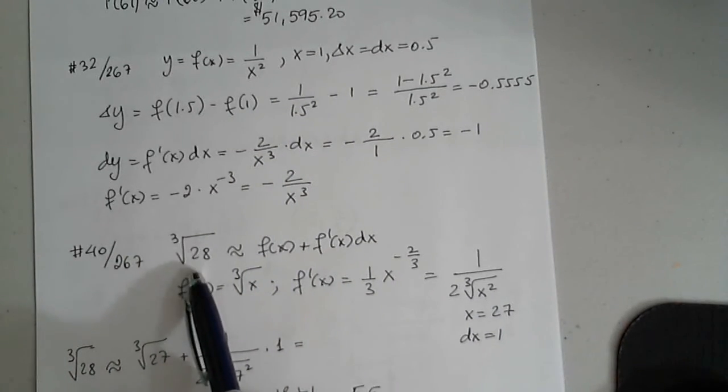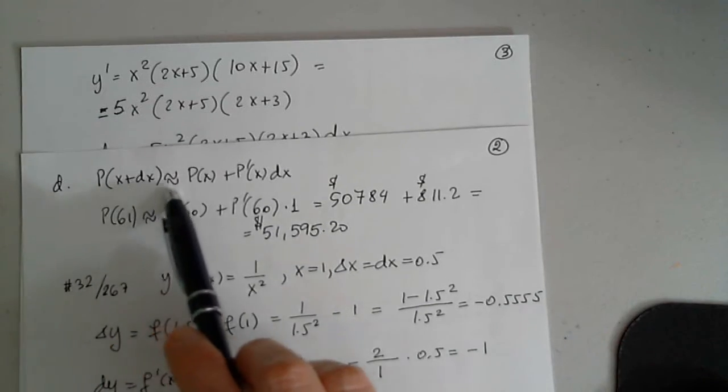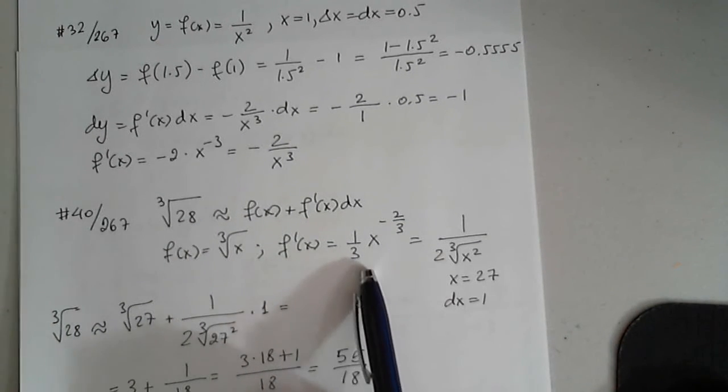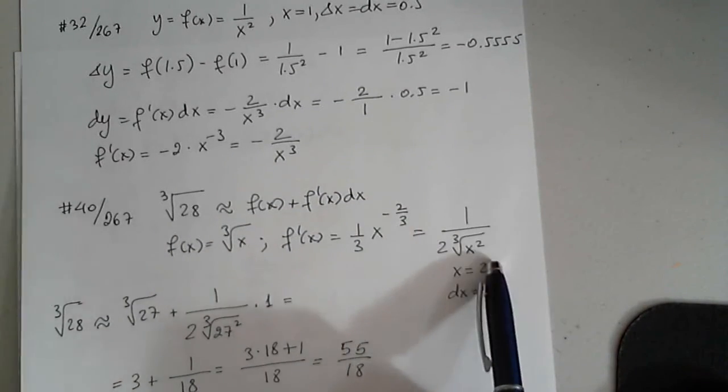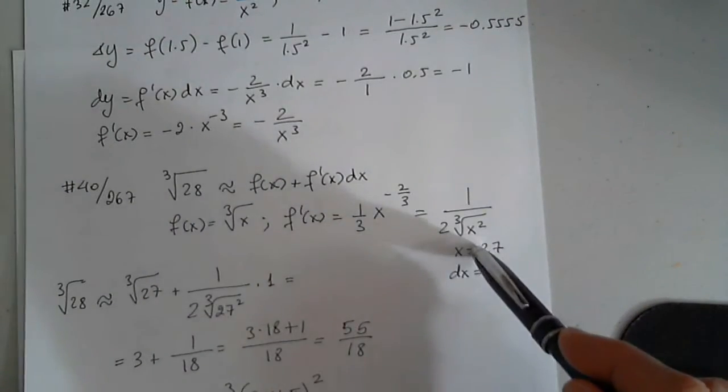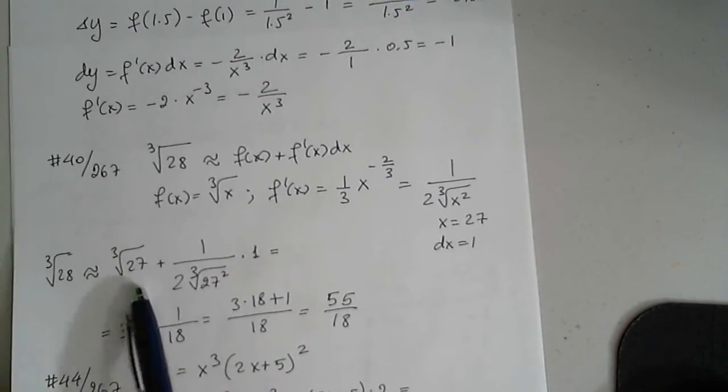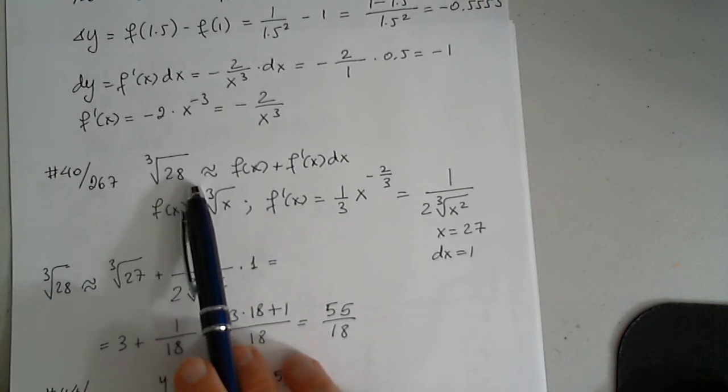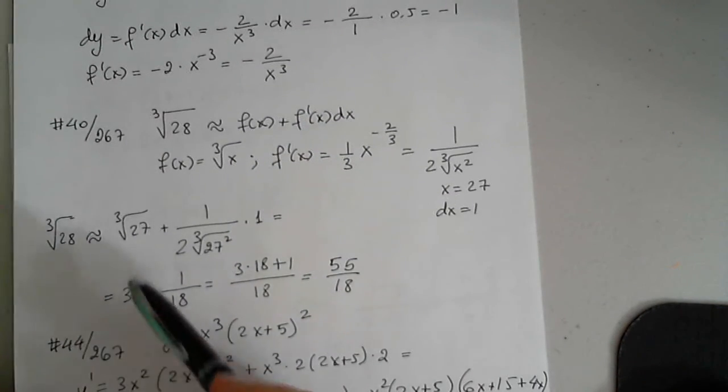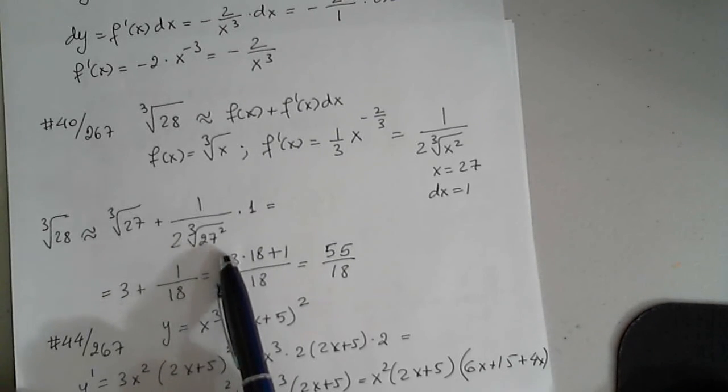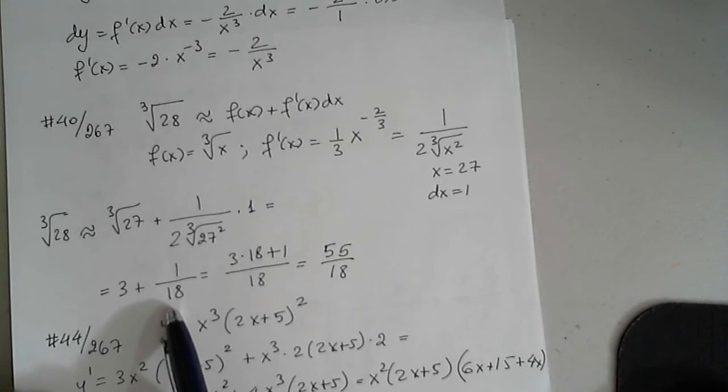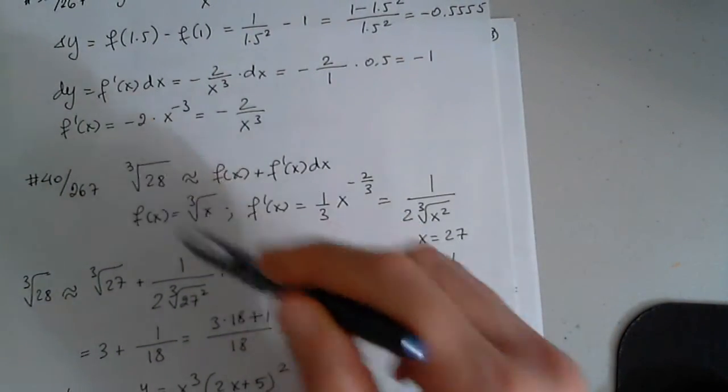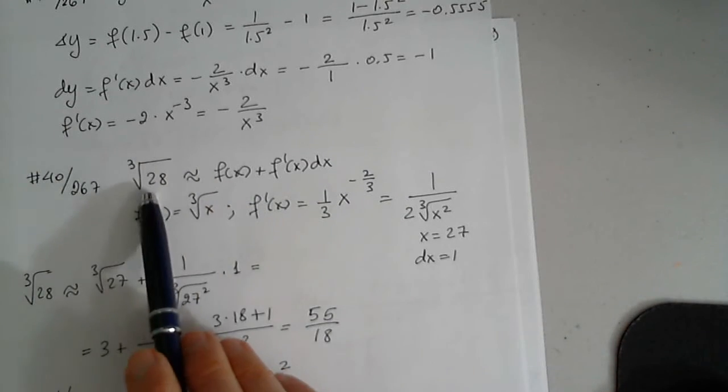Here we were asked to approximate the cube root of 28. So this is the same formula that we discussed. f of x plus f prime of x dx. So f of x is the cube root of x. f prime is 1 over 3 x to negative 2 thirds, which reduces to this. When we change the negative power into 1 over. And then I copied the cube root of 27 plus this, evaluated at 27, and times dx, which is 1. Because I'm looking at 27 to 28. So the cube root of 27 is 3. Another 3, 3 times 3 is 9, times 2 is 18. So this is 3 plus 1 over 18, which is this. This is guaranteed to approximate a cube root.